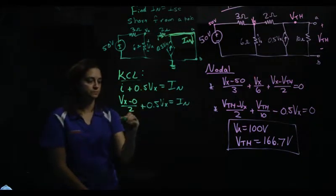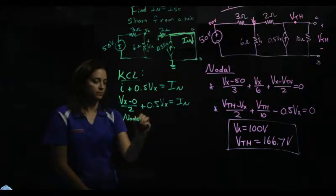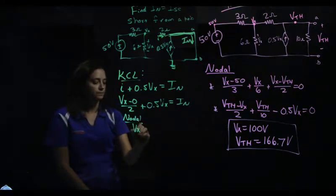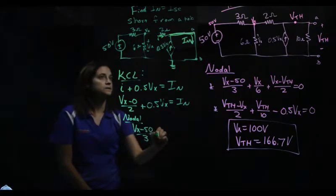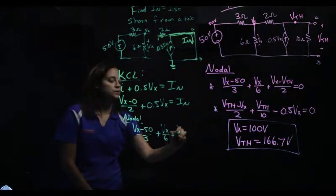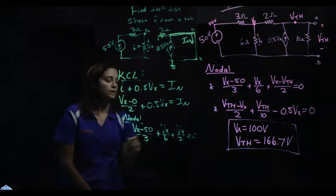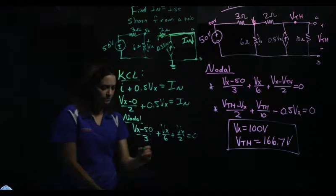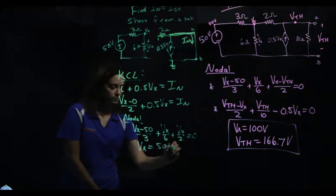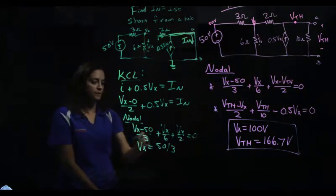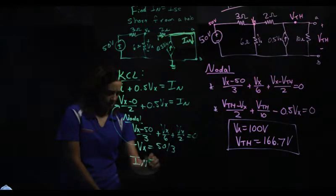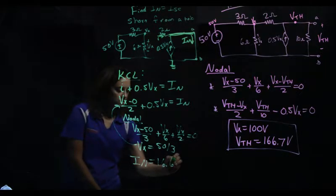So I need Vx. Let's do some nodal. Vx minus 50 over 3, plus Vx over 6, plus Vx over 2 equals 0. So if I solve that, I'm going to get a Vx of 50 over 3. Plugging that back in up here, I'm going to get an I-Norton of 16.67 amps.